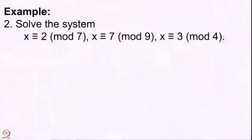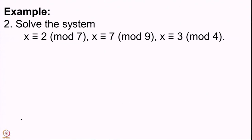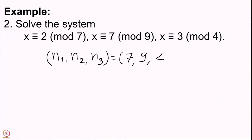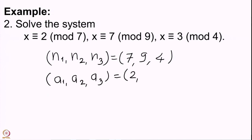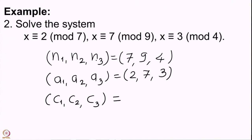Let us do one more problem before finishing this lecture. This is a similar system of simultaneous linear congruences. We write n1, n2, n3 as 7, 9, and 4, and a1, a2, a3 as 2, 7, and 3. We compute: c1 = n2·n3 = 9·4 = 36; c2 = n1·n3 = 7·4 = 28; c3 = n1·n2 = 7·9 = 63.